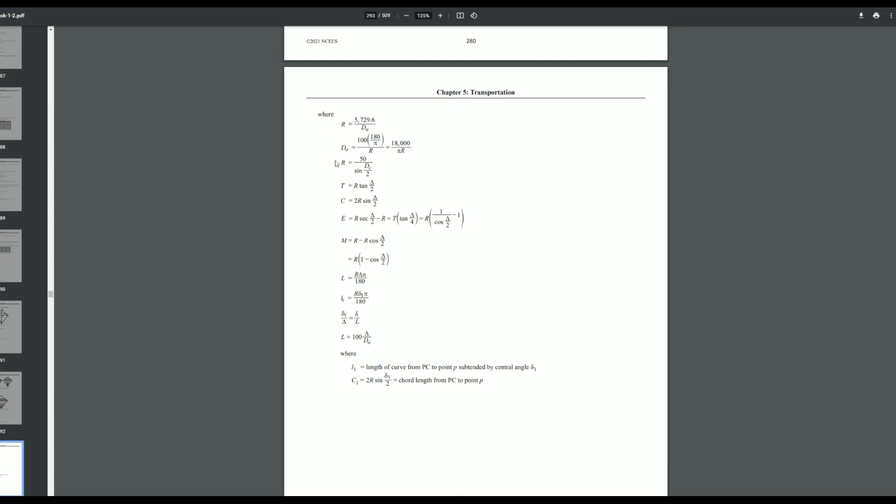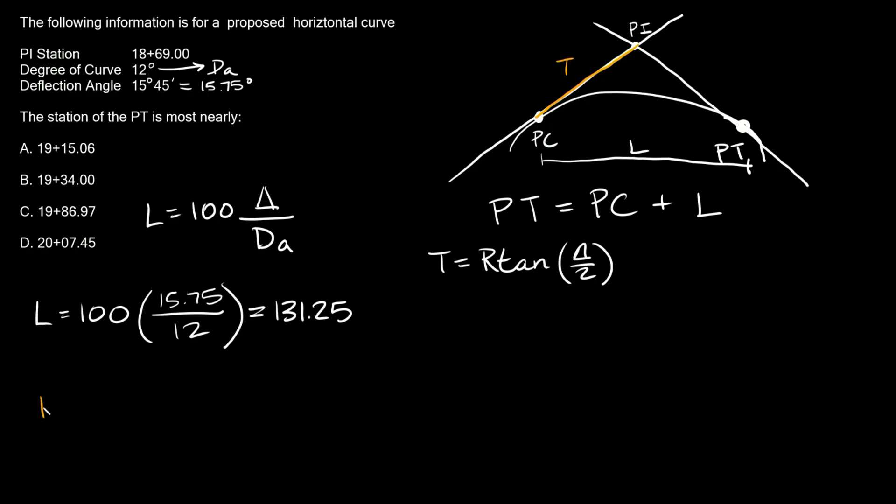So here gives us two ways to solve for the radius. We don't have a dc, but we do have a dA, so let's use this formula right here. So 5729.6 divided by dA. So r is equal to 5729.6 divided by dA, which dA again was 12.